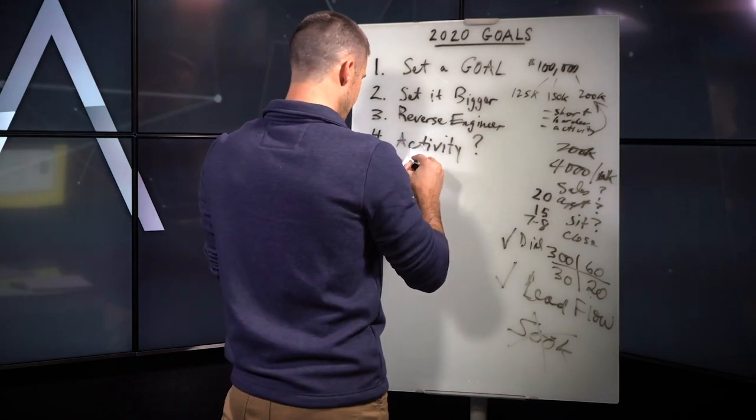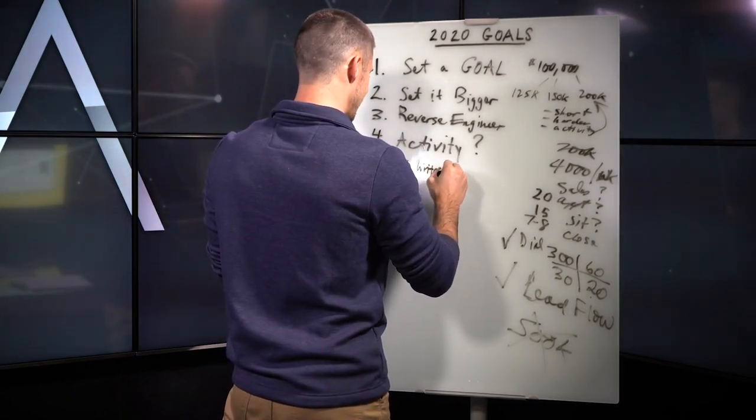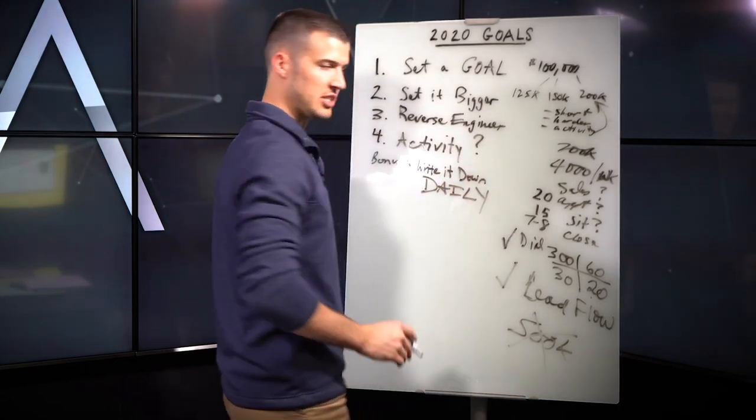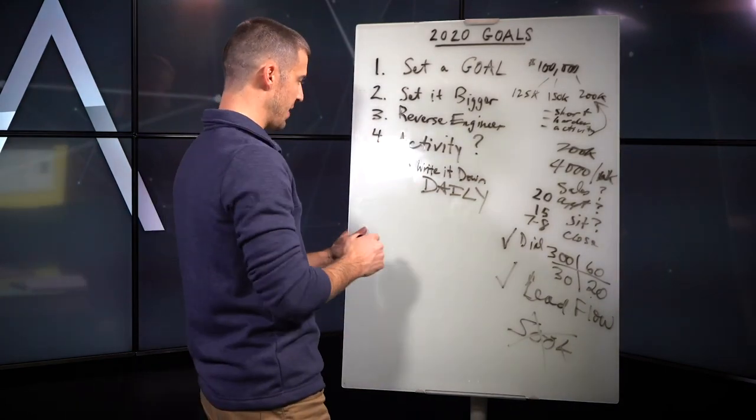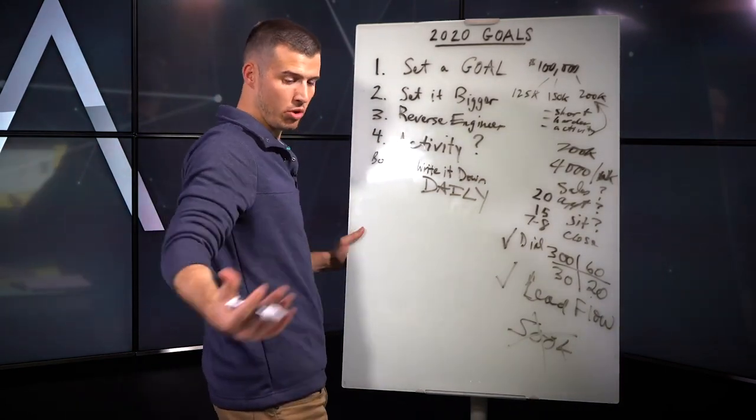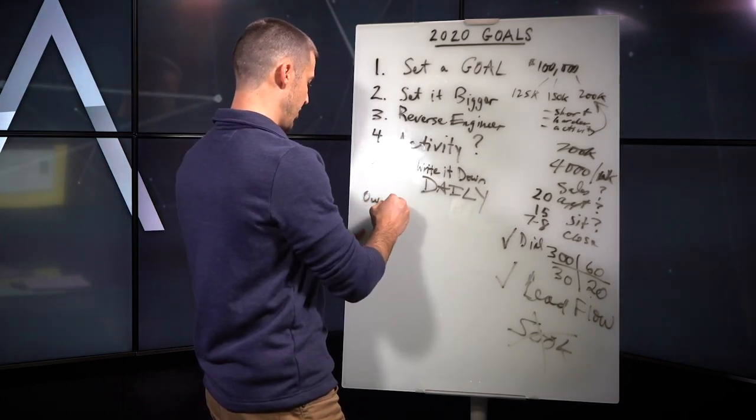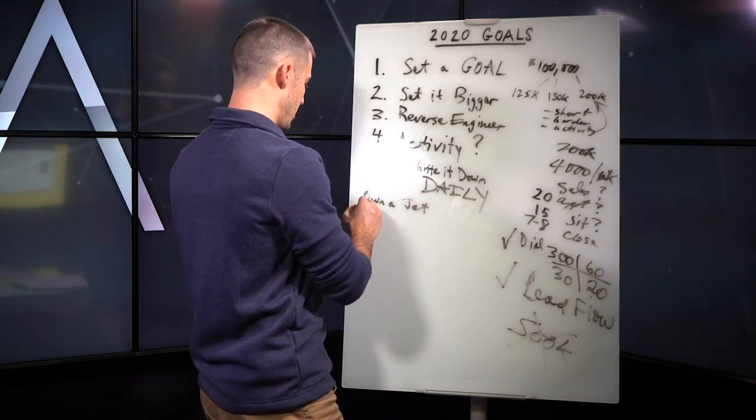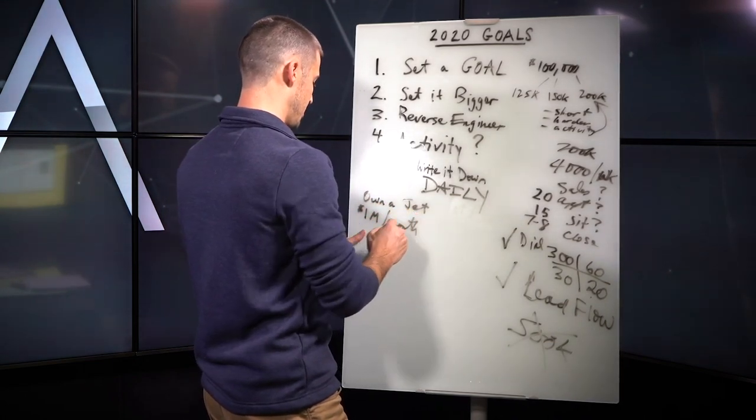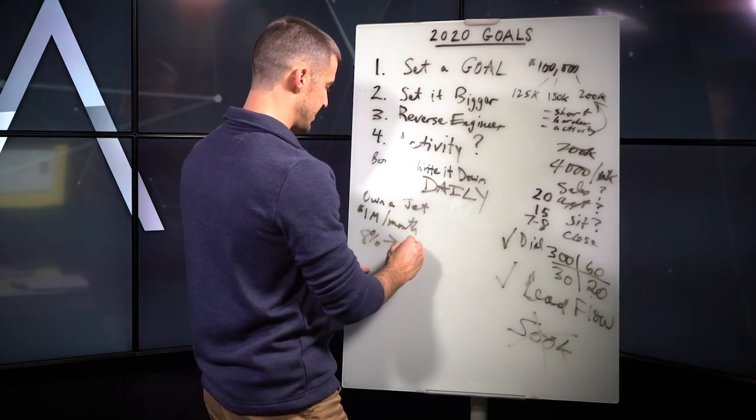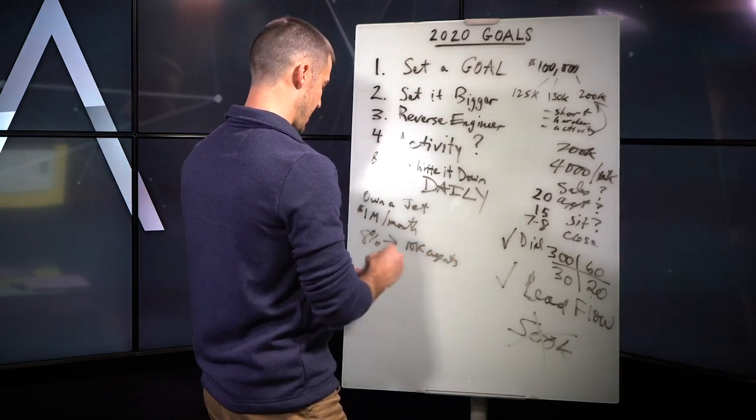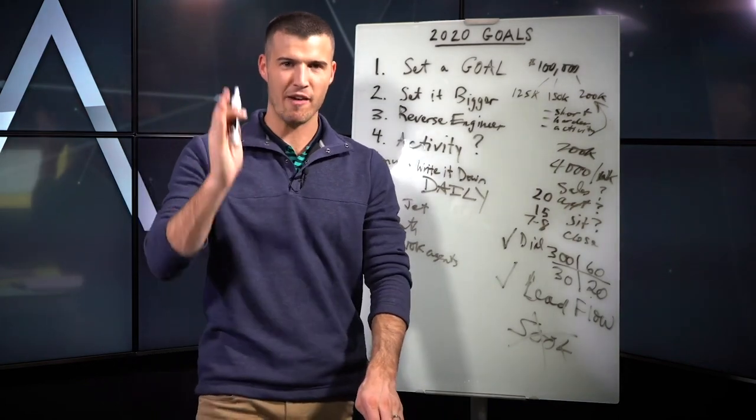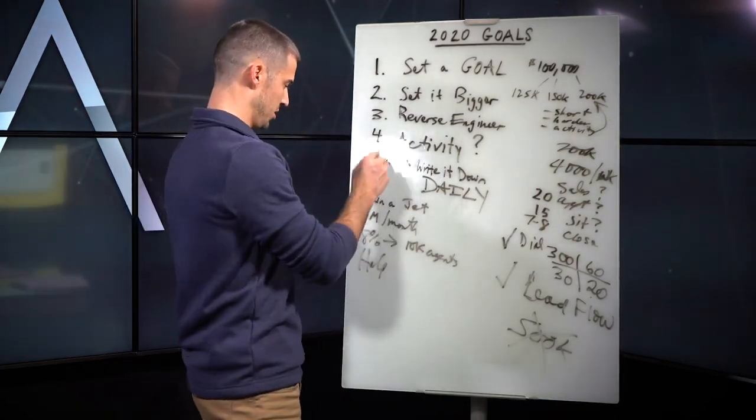Now, here's the bonus. The bonus is you need to write it down daily. This is something I do, something I believe in doing. So for example, my own goals is that I write down, I want to own a jet. I want to get our companies to $1 million per month. At our conference, I want to get to where we have 10,000 agents there one day. And I want to help every insurance agent in the world. Those are my own personal goals. You need to have freaking goals. Will I own a jet? Absolutely. Will we get to $1 million a month, probably before we own a jet.